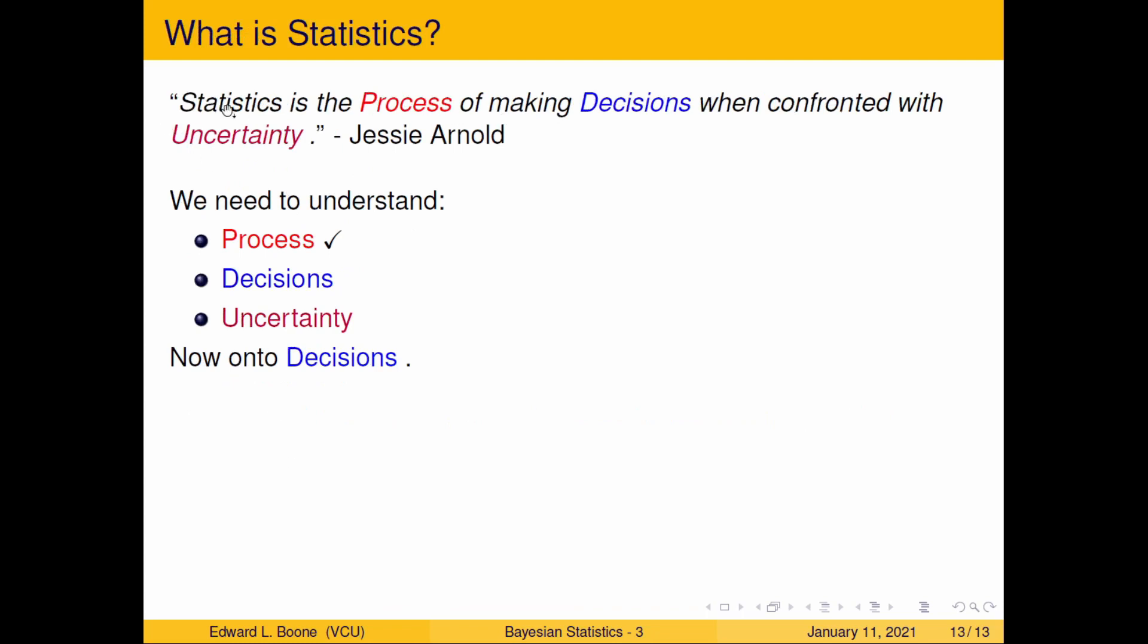Alright, so we're back to what is statistics. We're here looking at the process of decisions when confronted with uncertainty. We've covered what the process is. Next video, we're going to talk about what the decisions are. Or there's lots of decisions, but we'll focus on a few of them that are relevant to this course and kind of general enough that I cover probably about 90% of most people's decisions that they're going to make. So see you there.